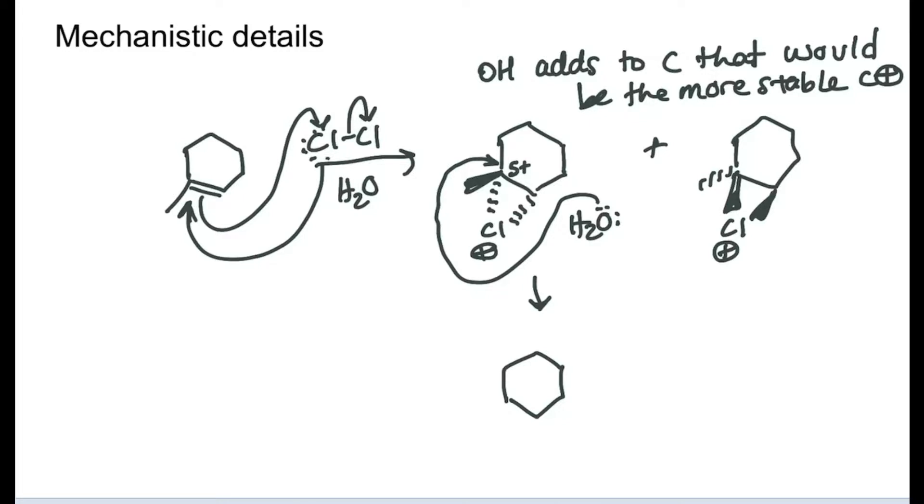The next step here is very much SN2-like. We kicked the electrons out onto the chlorine, releasing it, and that means that the water has to be on the wedge so we have that anti-addition. So that OH and Cl end up trans to one another. It's going to force the methyl back.